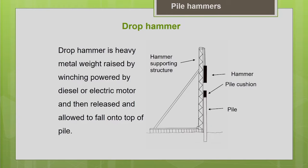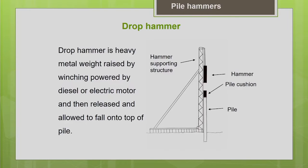First is the drop hammer, which is basically a heavy metal weight. It has to be lifted with some lifting mechanism — you can go for any lifting mechanism depending upon your project size, budget, or availability of equipment. You can use a simple pulley and rope or a crane. You lift the hammer to a particular height, then allow it to fall freely on the head of the pile by gravity.